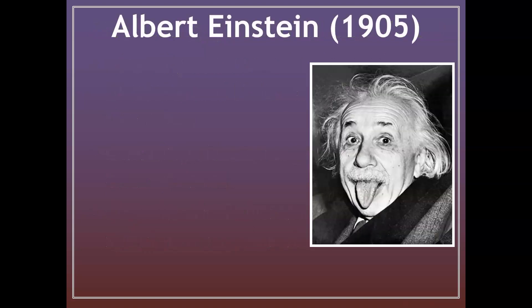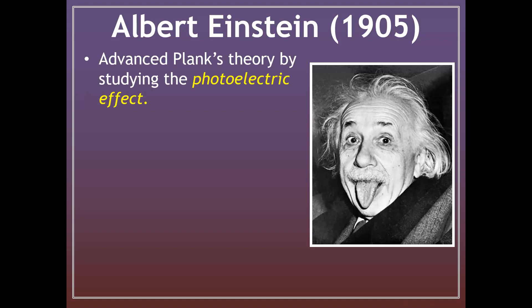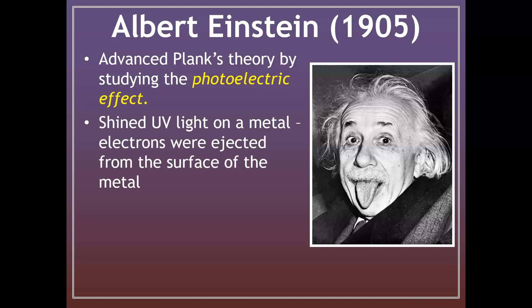In 1905, Albert Einstein helped to advance Planck's theory. Remember Planck came up with the equation that energy is directly related to the frequency of the wave. Einstein helped to advance Planck's theory by studying what was called the photoelectric effect. He shined UV light on a metal and electrons were ejected from the surface of the metal — this is what the photoelectric effect is.